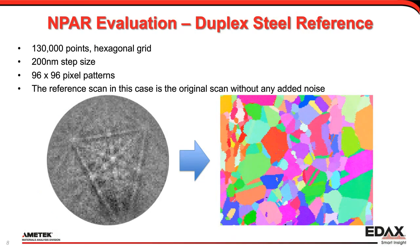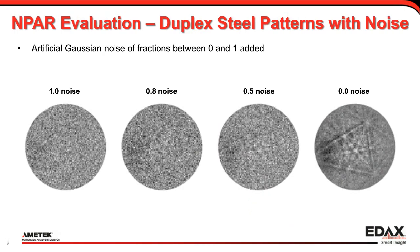To show this as a model experiment, we collected a very high quality map at very slow acquisition rates to get very high quality diffraction patterns with a very high indexing success rate. You can see the map is very beautiful. We then artificially add noise to the diffraction patterns, re-index them, see how the noise affects the indexing and map quality, and then see how the NPAR routine does in bringing back both the diffraction pattern and map quality.